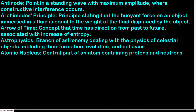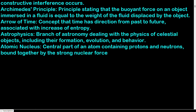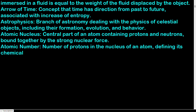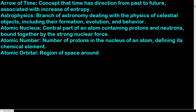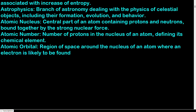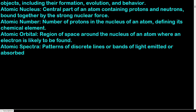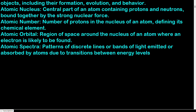Astrophysics: branch of astronomy dealing with the physics of celestial objects, including their formation, evolution, and behavior. Atomic nucleus: central part of an atom containing protons and neutrons bound together by the strong nuclear force. Atomic number: number of protons in the nucleus of an atom, defining its chemical element. Atomic orbital: region of space around the nucleus where an electron is likely to be found. Atomic spectra: patterns of discrete lines or bands of light emitted or absorbed by atoms due to transitions between energy levels.